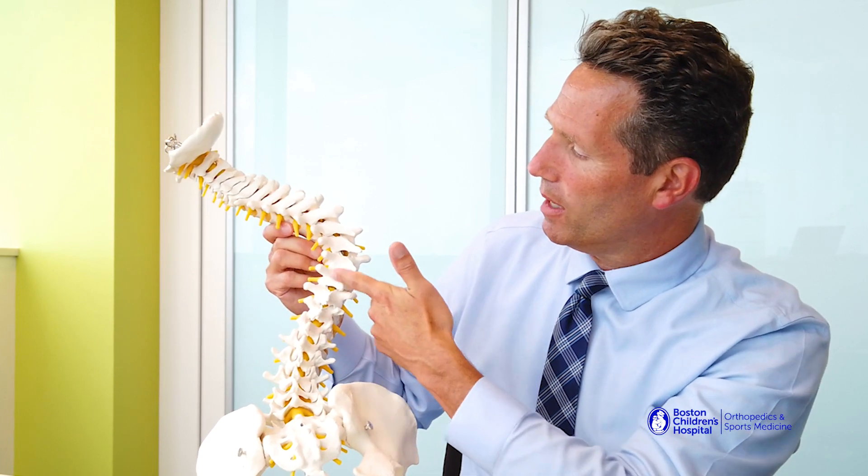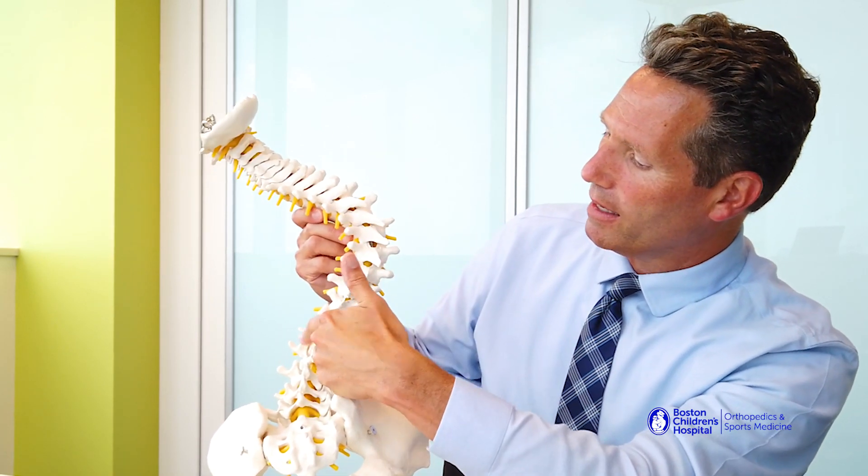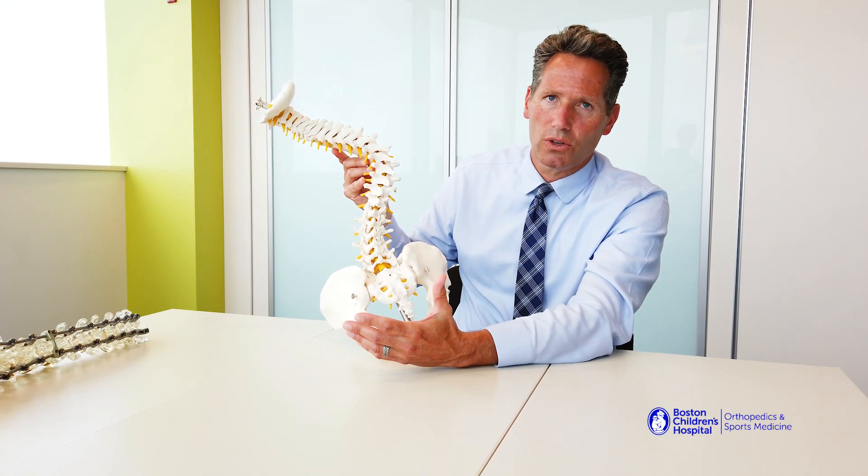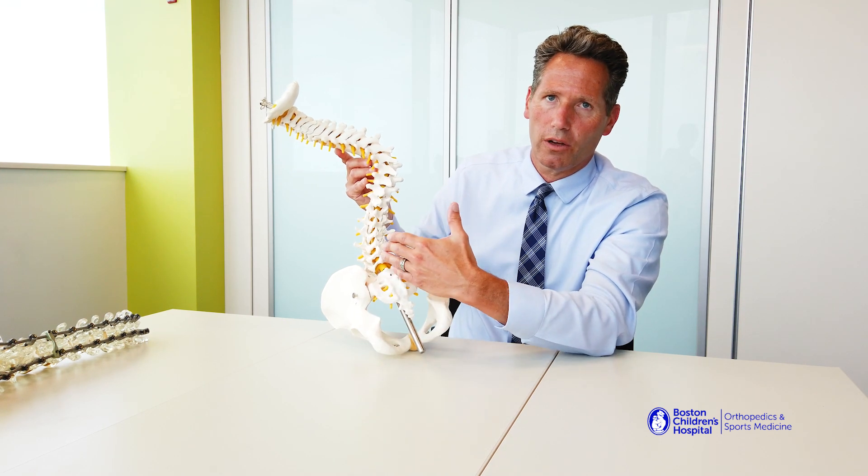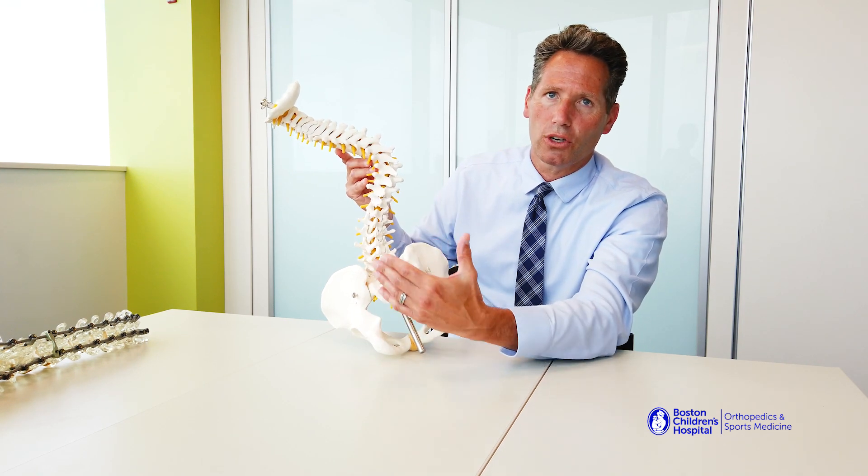So this is a standard spine model and you can see the curve in the back. Having a curve per se isn't always a problem. The problems develop if you have a large enough curve by the time you're done growing.